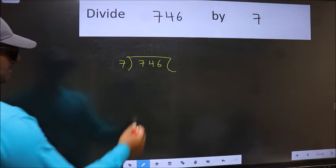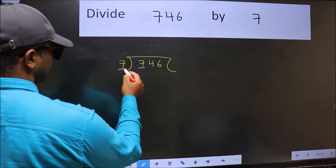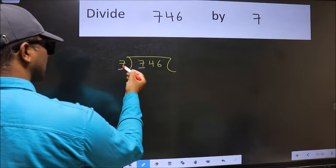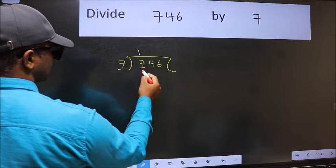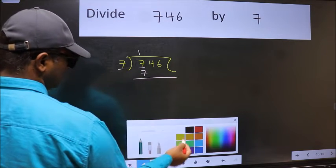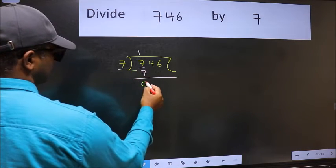Next, here we have 7 and 7 here. When do we get 7 in the 7 table? 7 ones are 7. Now we should subtract. We get 0.